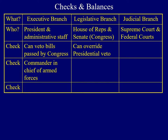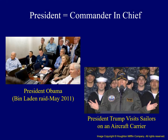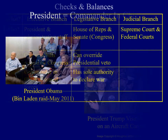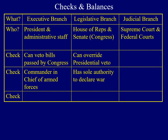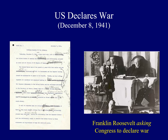When it comes to the military, the president is Commander-in-Chief of our Armed Forces. We see President Obama in the Situation Room approving the raid on Osama bin Laden, and President Trump addressing troops on an aircraft carrier. While the president is Commander-in-Chief, only Congress has the authority to declare war. Franklin Roosevelt in December of 1941 addressed Congress and asked them to declare war following the Japanese attack on Pearl Harbor the previous day.